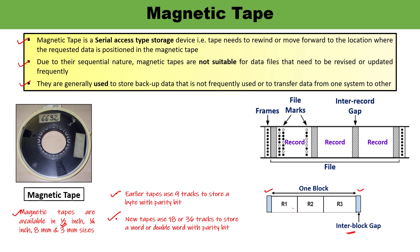When a number of records are stored on a tape — record one, record two, record three — between two adjacent records there is a gap known as the inter-record gap. There are also reflective markers: one at the initial point and an end-of-reel marker. These markers are used to identify the start and end of the reel. It is important to understand the difference between inter-record gap and inter-block gap.